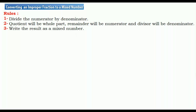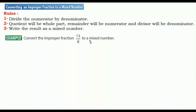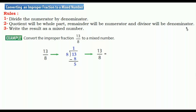Let's see an example. Convert the improper fraction 13 over 8 to a mixed number. We divide the numerator by the denominator using long division. How many 8s are in 13? One. 1 times 8 equals 8. Then subtract: 13 minus 8 equals 5. The quotient is the whole part, the remainder is the numerator, and the divisor is the denominator — as you can see.